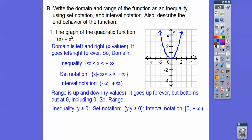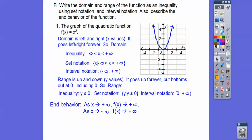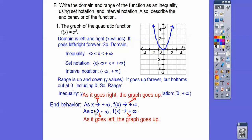Range values: it goes up forever and ever, but it doesn't go down forever — it bottoms out at y equals zero. So we say y is greater than or equal to zero. In set notation: the set of y such that y is greater than or equal to zero. We have a bracket on zero because zero is included — zero is part of the graph. It goes to infinity, so infinity has a parenthesis. End behavior: as x goes to infinity, f(x) goes to infinity — as x goes to the right, f(x) goes up. As x goes to the left, f(x) also goes up. So as x goes to negative infinity, f(x) goes to positive infinity.